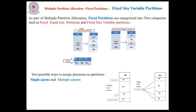Let us take a sample input of incoming processes P1, P2, and P3. The requirement of P1 is 9K, the requirement of P2 is 19K, and the requirement of P3 is 12K. Now I want to load these processes into the main memory.